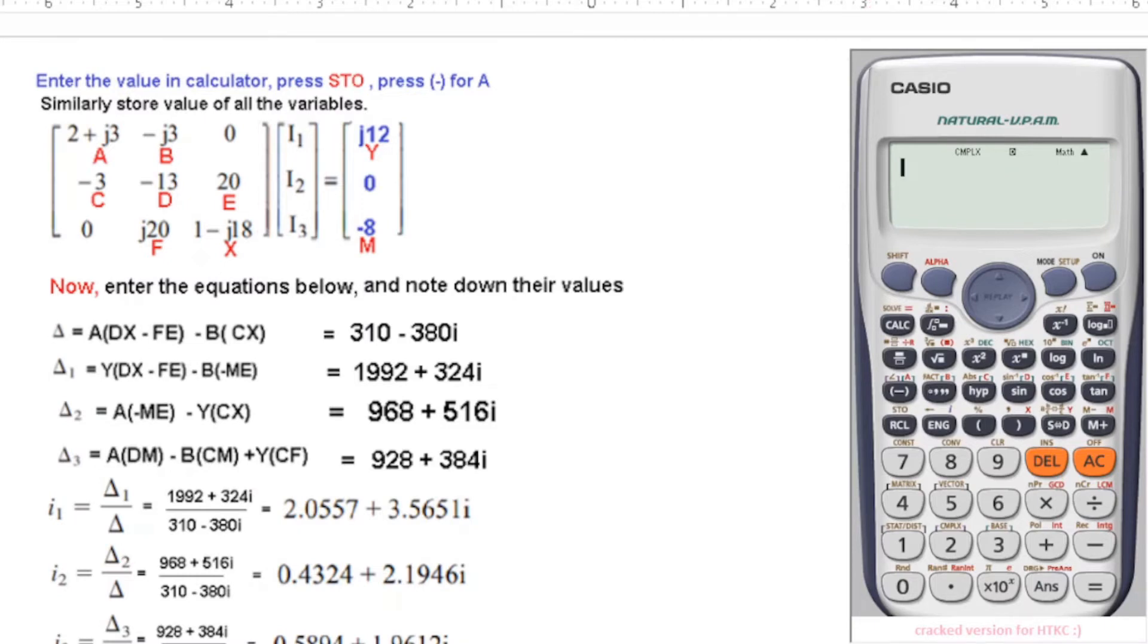Now we will assign these values in the calculator. First of all, 2 + j3 to be given name A. We will add 2 + 3i, then we will press shift store, and variable A. Without alpha, we simply press the negative sign for assigning variable A. Now clear this. Minus j3 is for B, so minus 3i, shift store B. Then minus 3 is C, store C. Clear.